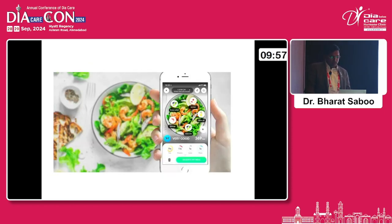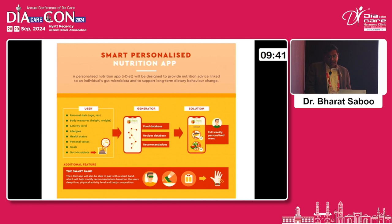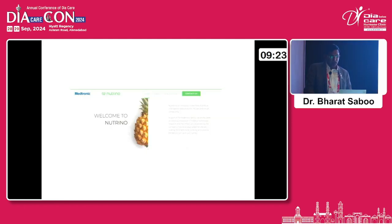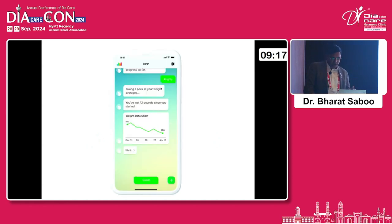With AI, you can click a picture of food and it will tell you whether that food is good or not based on your disease condition, what it contains, how many calories are there, and the protein, fat, and carbohydrate breakdown. This feeds into smart personalized nutrition apps — they take user data, apply a generative AI component, and provide a solution including a full weekly personalized menu. This is the Nutrino app — this is the interface and how the chat works.